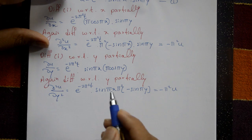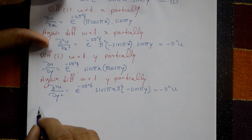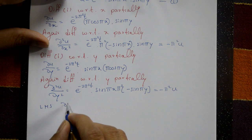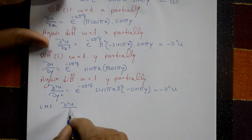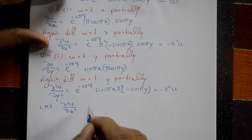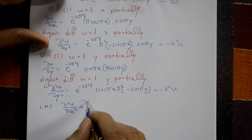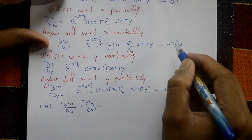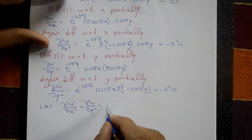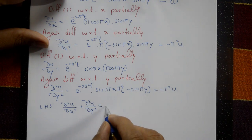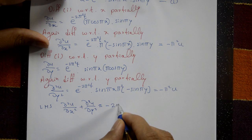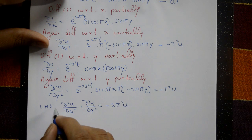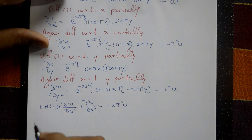Adding ∂²u/∂x² and ∂²u/∂y² for the left-hand side: ∂²u/∂x² + ∂²u/∂y² = minus 2π²u. This is the left-hand side.